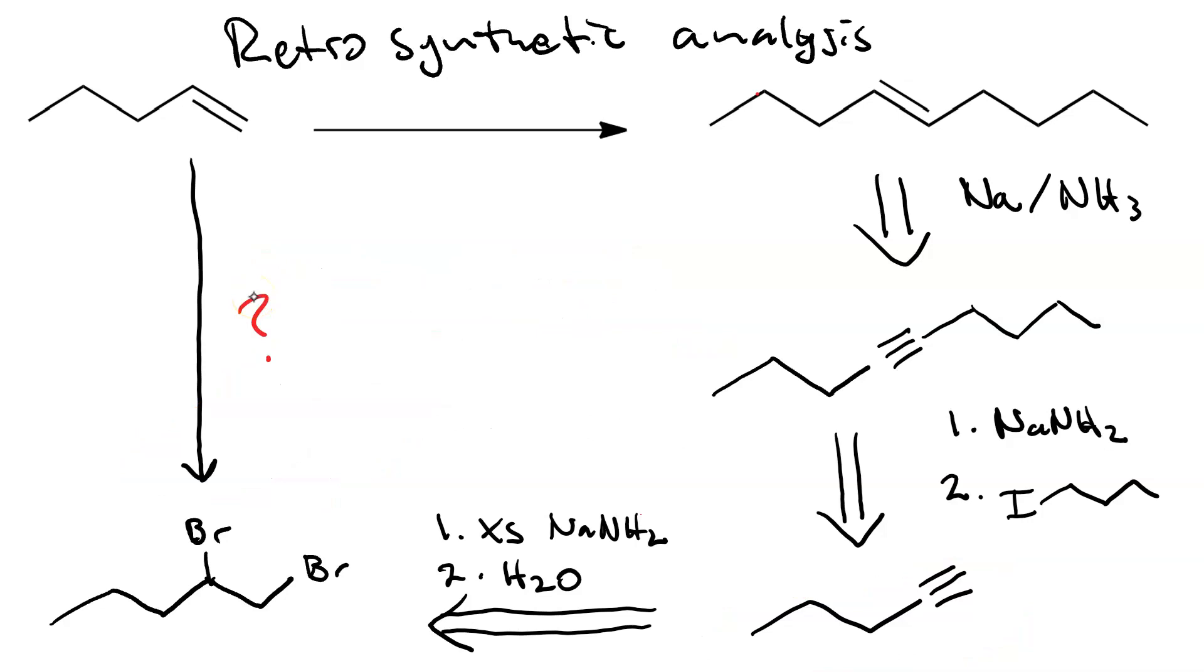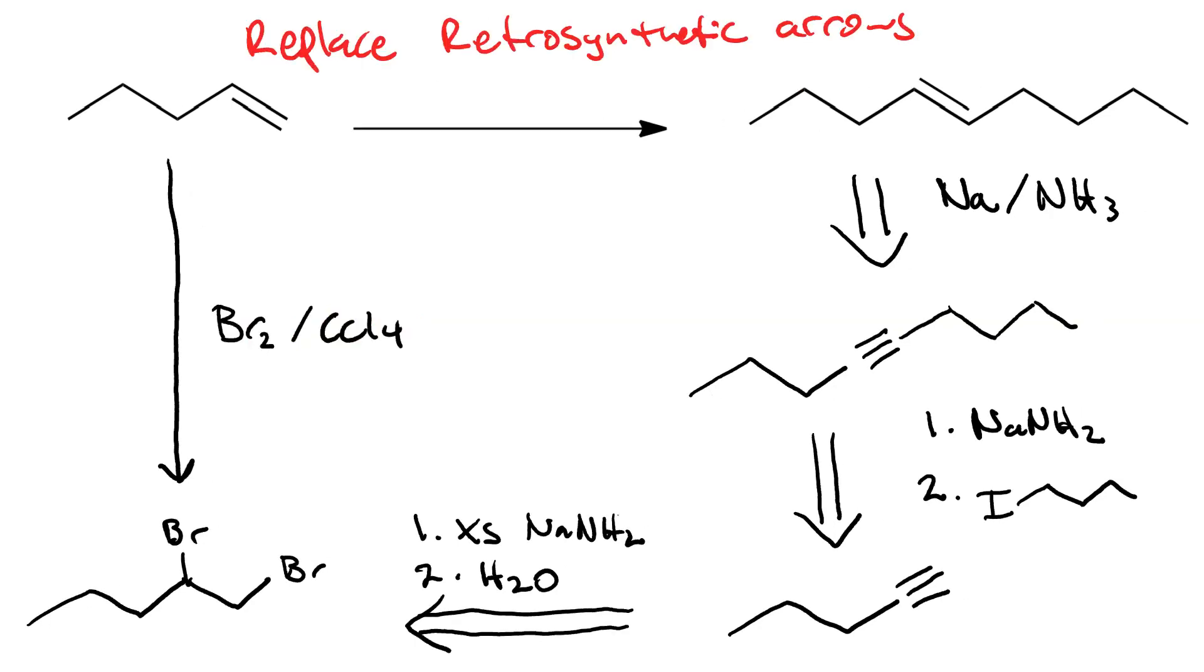What reagents do we use to go from an alkene to a vicinal dibromide? We simply need bromine, Br2, in carbon tetrachloride, one equivalent. We use the CCl4 as the solvent instead of water to avoid getting a halohydrin.